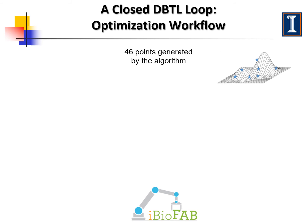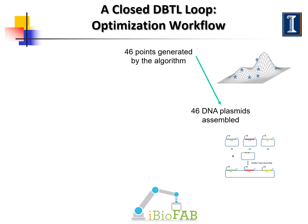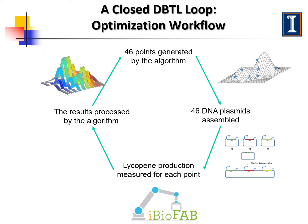In the first round, we randomly selected 46 variants from the library and analyzed the lycopene production levels. The results were analyzed by a machine learning algorithm to identify promoter combinations that likely increase lycopene synthesis. In the second round, we constructed the library biased towards these promoter combinations and selected another 46 variants for analysis, which led to the identification of new variants with further improved lycopene production. The results were analyzed again by the machine learning algorithm.